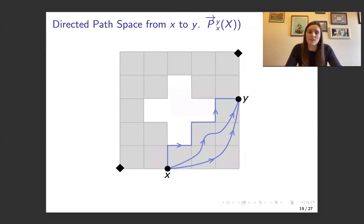And we can talk about directed path spaces between two particular points. And so here we have X and Y and illustrating three directed paths in this directed path space.